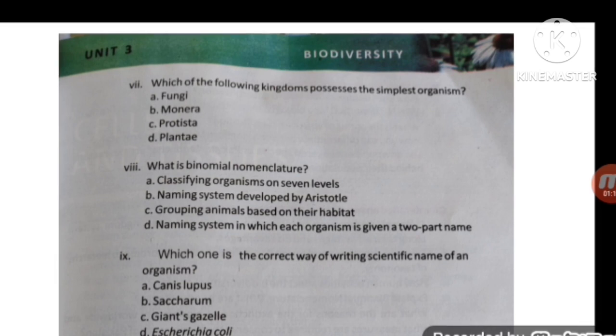MCQ number seven: which of the following kingdoms possesses the simplest organism? The kingdom Monera contains the simplest organisms.